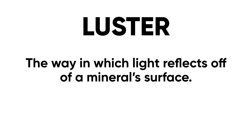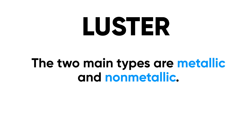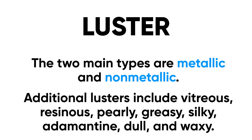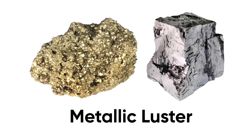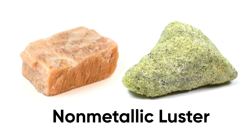We also want to look at additional properties. Let's look at luster — the way in which light reflects off of the surface of the mineral. There are two main types: metallic and non-metallic. Metallic minerals actually look like chunks of metal — gold, brassy, silver kind of colors, very reflective with light sparkling off the surface. This is as opposed to non-metallic minerals like potassium feldspar and olivine, which look more dull and less like metals. There are also additional luster types you may come across, such as vitreous, pearly, silky, and waxy.